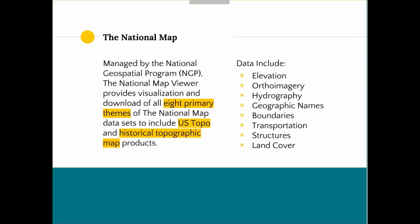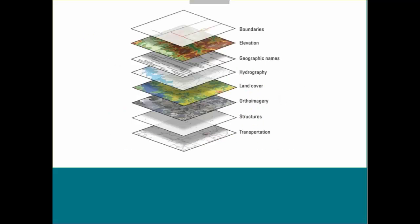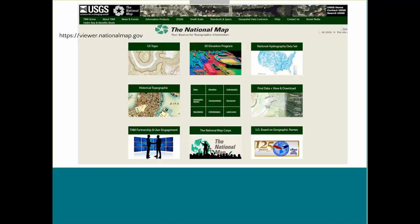The National Map is great because you can find a whole series of information from eight primary themes. All these data include things like elevation, geographic names, boundaries, land cover, and you can also use the National Map Viewer to look for U.S. topos and historical topographic map products. This is just an illustration of the many different resources you can find in the National Map Viewer — boundaries, elevation, land cover — these are all different layer sets that the USGS uses. If you go to viewer.nationalmap.gov, on the right-hand side you can see where it says Find Data.